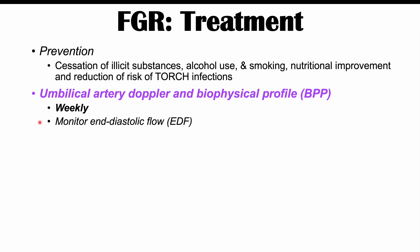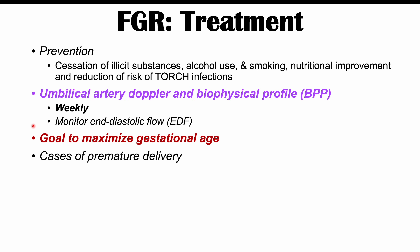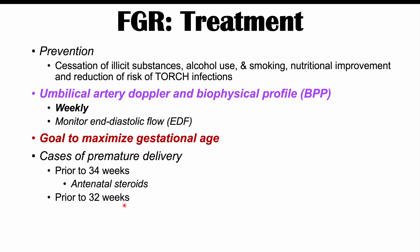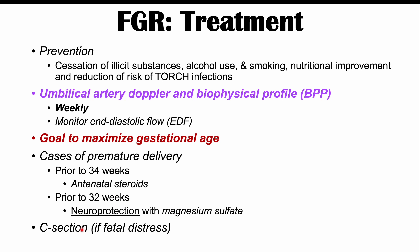Although there is no real cure for fetal growth restriction, the goal of treatment is to maximize gestational age to reduce complications. If premature delivery is necessary prior to 34 weeks, antenatal steroids are given to promote lung maturation. If delivery is required before 32 weeks, magnesium sulfate is administered for neuroprotection. A C-section may be required in cases of fetal distress.